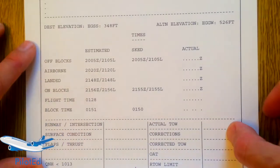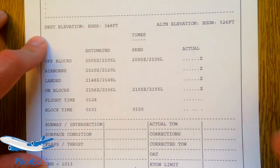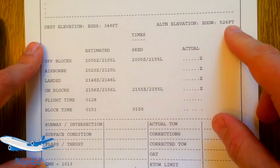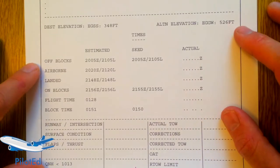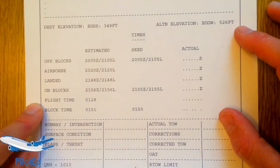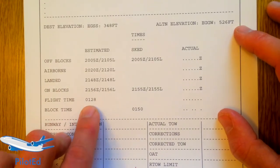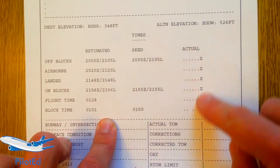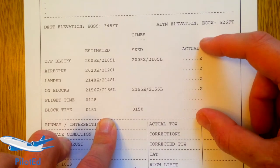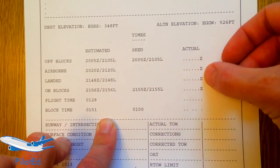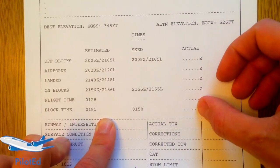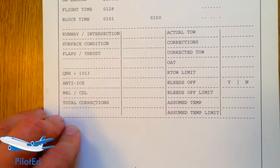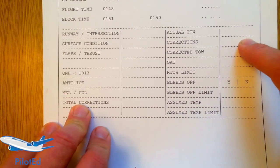There are also bits for destination elevation and alternate elevation, which get popped into the pressure system. We have estimated off-blocks, airborne, landed, and on-blocks times, plus total flight time and block time — all from the second page. Here we fill in the actuals as we go: actual off-block, takeoff, landing, on-block, total flight time, and total block time. We now tend to do performance on the OPT or iPad rather than by hand.